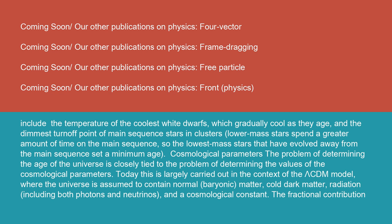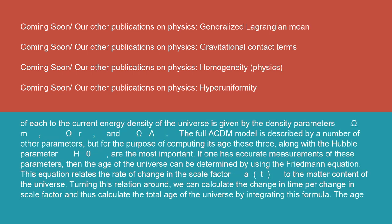Cosmological parameters: The problem of determining the age of the universe is closely tied to the problem of determining the values of the cosmological parameters. Today, this is largely carried out in the context of the Lambda-CDM model, where the universe is assumed to contain normal, baryonic matter, cold dark matter, radiation, including both photons and neutrinos, and a cosmological constant.